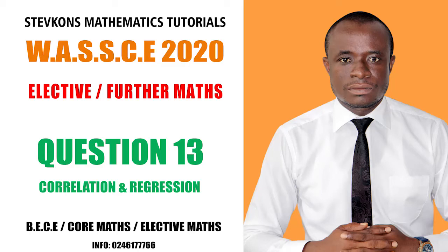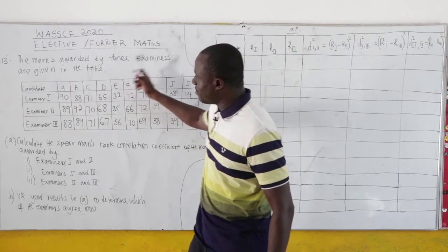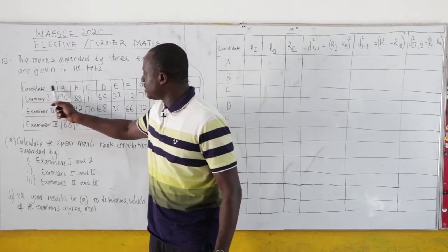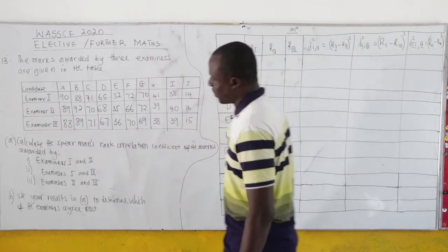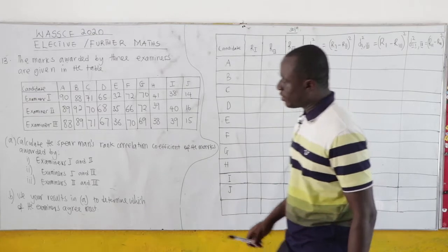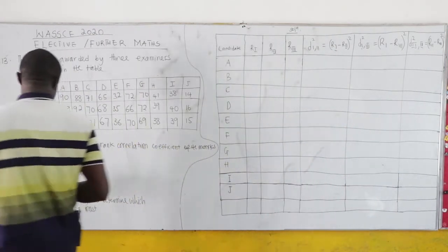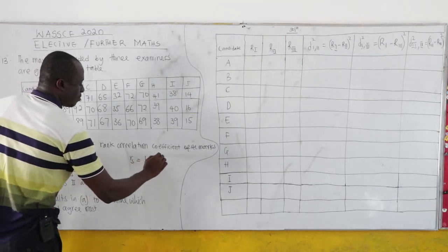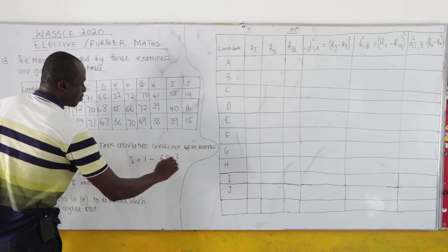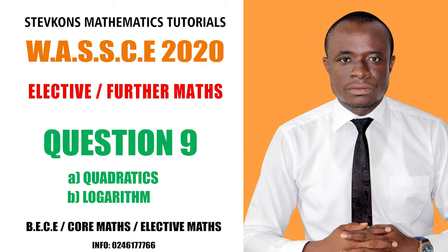This is the 2020 elective exam, question number 13. The marks awarded by three examiners are given in the table — candidates A through J, with examiner 1, examiner 2, and examiner 3. The question asks us to calculate the Spearman's rank correlation coefficient of the marks awarded by the following examiners. The formula is: r = 1 minus (6ΣD² / n(n²−1)).